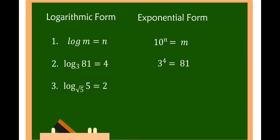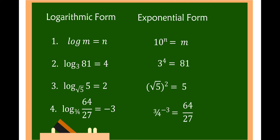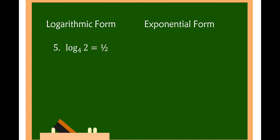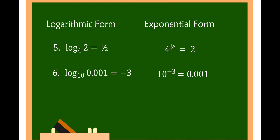The logarithm of 5 to the base of square root of 5 is equal to 2. The base is square root of 5, the exponent is 2, and the answer is 5, so we have the square root of 5 squared is equal to 5. Then the logarithm of 64 over 27 to the base of 3/4 is equal to negative 3; that is, 3/4 raised to negative 3 is equal to 64 over 27. The logarithm of 2 to the base of 4 is equal to 1/2; in exponential form, 4 raised to 1/2 is equal to 2. And the logarithm of 0.001 to the base of 10 is equal to negative 3 — this is a common logarithm — so 10 raised to negative 3 is equal to 0.001.